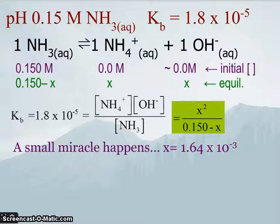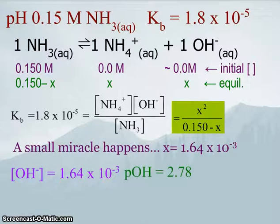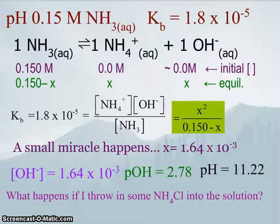We get the value of x is 1.6 times 10 to the minus 3, which is equal to our hydroxide ion concentration. That means our pOH is 2.78, and we get a pH of 11.2. Now, here's the wrench. What happens if into this solution we had some ammonium chloride already in there?